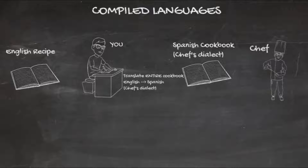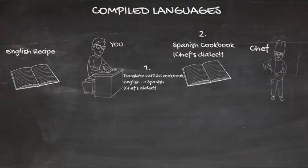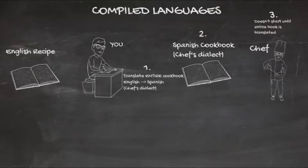You translate the cookbook from English to Spanish and give him the translated version. He's then able to find the recipe he wants and follow those instructions line by line. A few key points specific to this analogy: one, you translated the entire cookbook despite him only needing one recipe. Two, you translated specifically for the dialect that chef speaks — any other dialect and he won't even attempt the recipe. Three, he doesn't start cooking until you are done translating the entire cookbook.